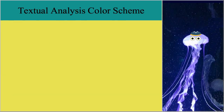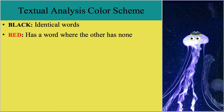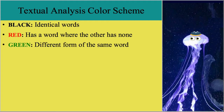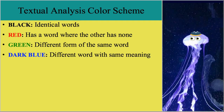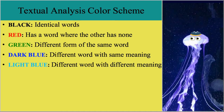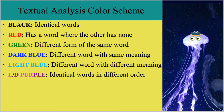I will be using the following color scheme to help with analyzing the text for a comparison. Black for when the texts have identical words. Red for when one text has a word that the other doesn't. Green for when different forms of the same word is used. Dark blue for when different words are used that have the same basic meaning. Light blue for when different words are used that have different meanings. And light and dark purple for when the texts have identical words but in a different word order. This will help to quickly and effectively illustrate the variations.